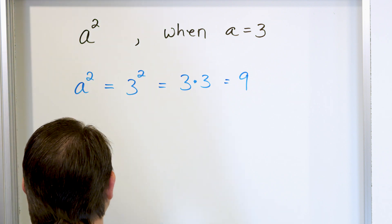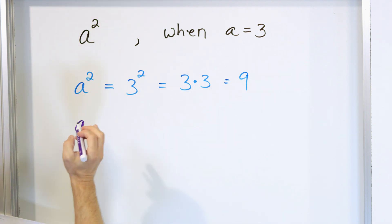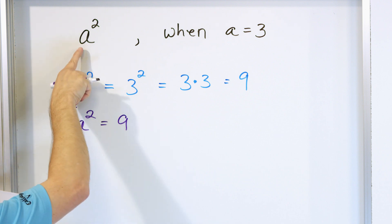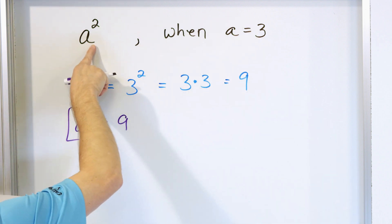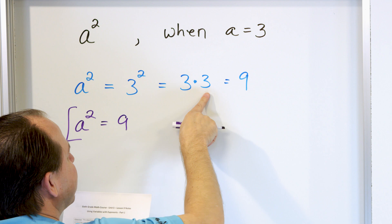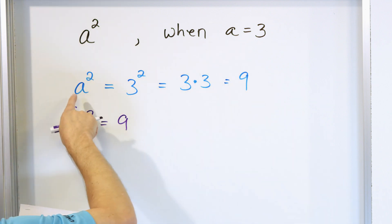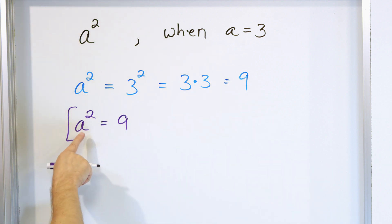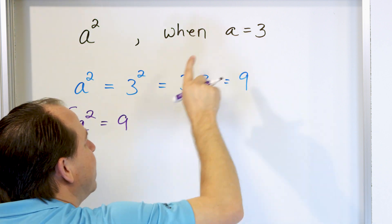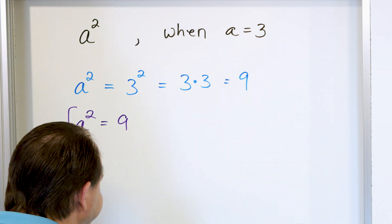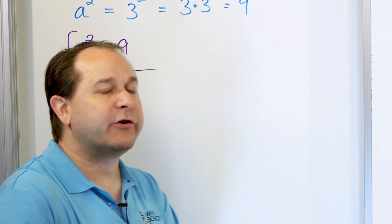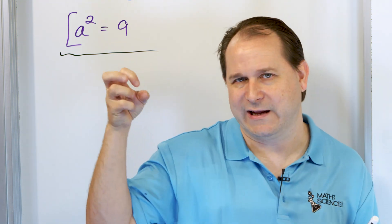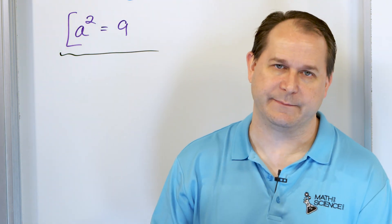So at the end of the day, the value of the expression A squared, when A is equal to 3, is equal to 9. We start with A squared, then we say A is 3, we stick it in there, so it has to be 3 squared. That equals 3 times 3, which equals 9. This whole chain of equal signs means they're all equal to each other, so A squared is equal to 9 — but only when A is equal to 3, which is what I gave you in the problem statement. This lesson is really just trying to get you comfortable seeing letters, taking the value of the variables, and sticking them in to calculate something.